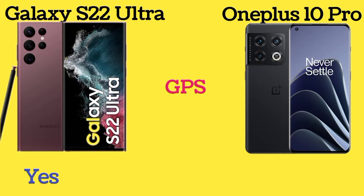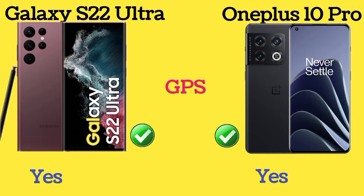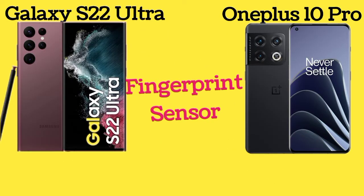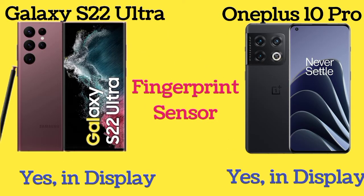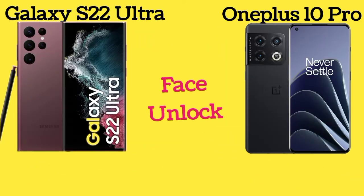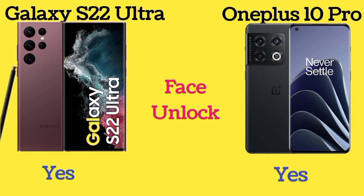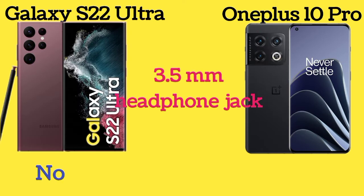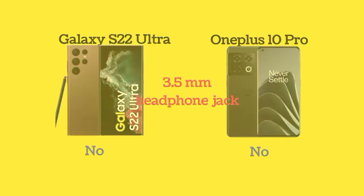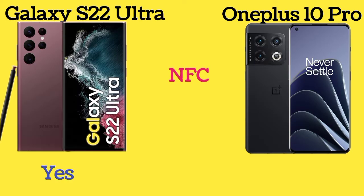Galaxy S22 Ultra and OnePlus 10 Pro both have an in-display fingerprint sensor. Both phones also support face unlock. Additionally, both Galaxy S22 Ultra and OnePlus 10 Pro have NFC.